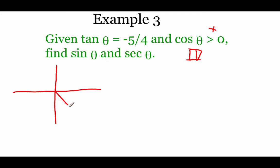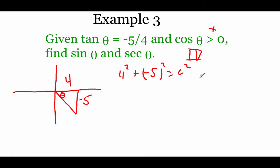With the angle in the fourth quadrant, tangent is opposite over adjacent: five on top and four on bottom. The vertical side heading downward is negative five. Using the Pythagorean theorem: 4 squared plus negative 5 squared equals c squared, giving 16 plus 25 equals 41. So the hypotenuse c is the square root of 41.